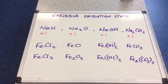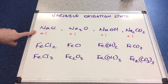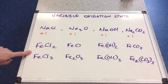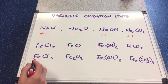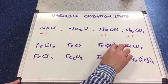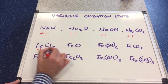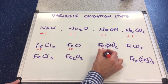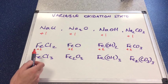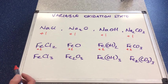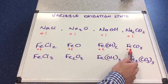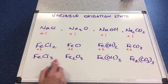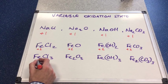I've added some compounds of iron to show the difference between a non-transition element and a transition element. I've done the chloride, the oxide, the hydroxide and the carbonate. In all of these compounds of iron, the iron is in the plus two oxidation state. In all of these compounds, iron is also in the plus three oxidation state.